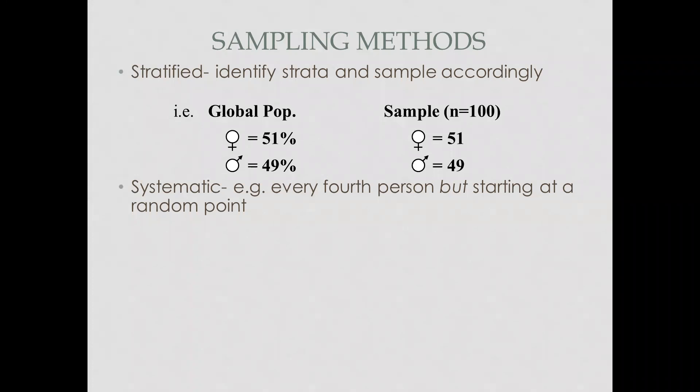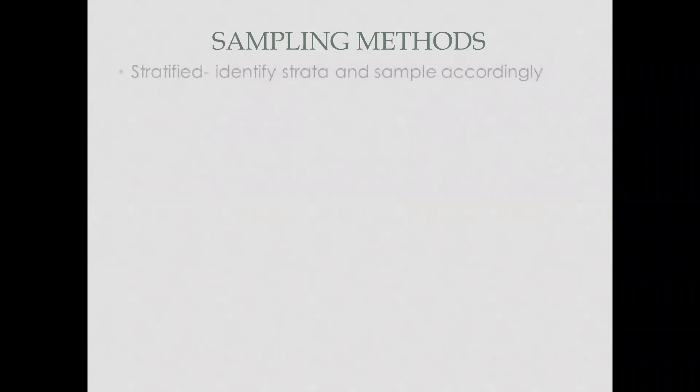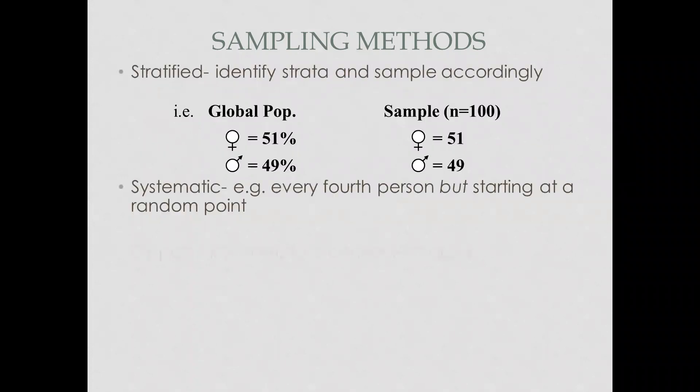Systematic sampling means selecting every second person, every fifth person, or every tenth person — whatever interval you choose. For example, if you have 100 people, you work on every second person from those hundred. Regarding field differences, stratification is least applicable in arts, literature, or language-related studies, where we normally go for random or convenient sampling, sometimes systematic. But science students go for stratification and cluster sampling most of the time, since quantitative research deals with generalization.